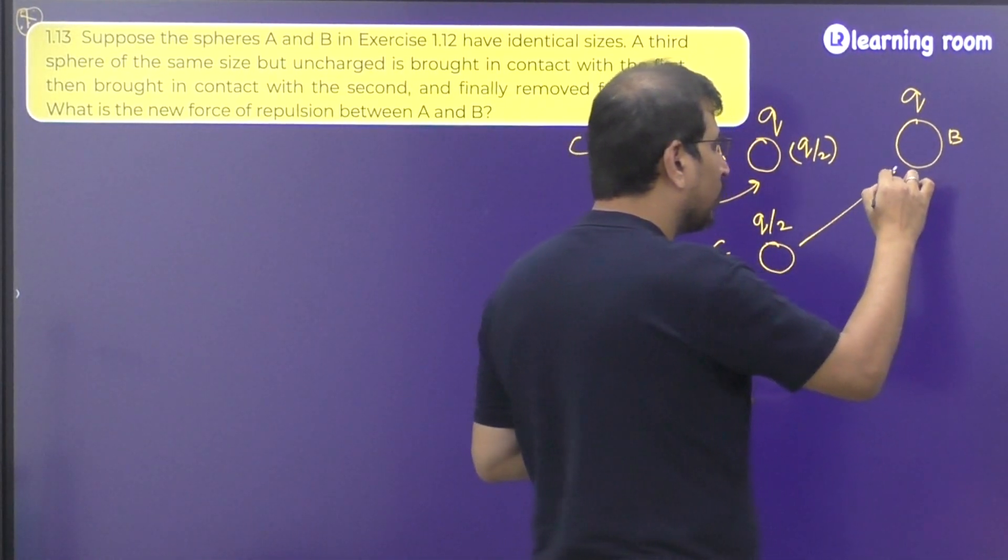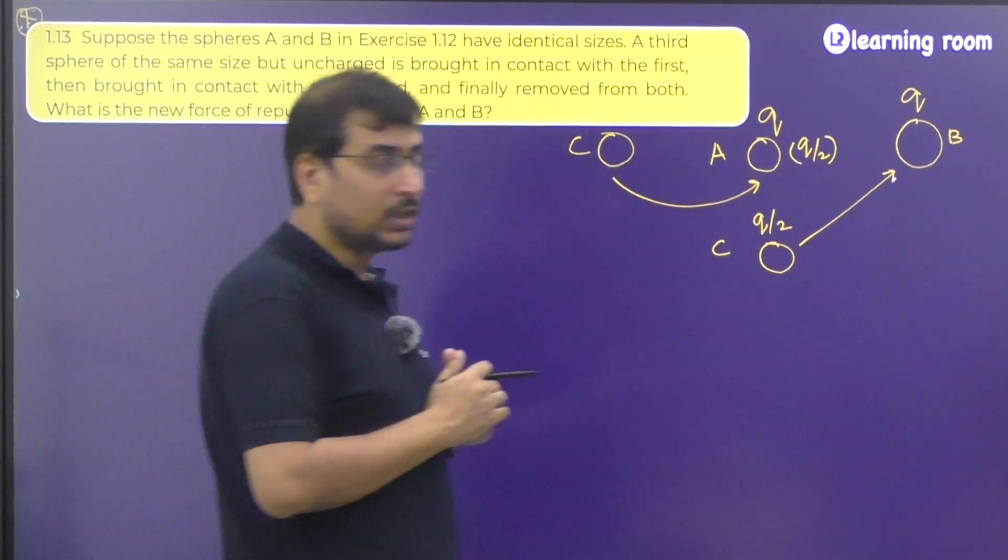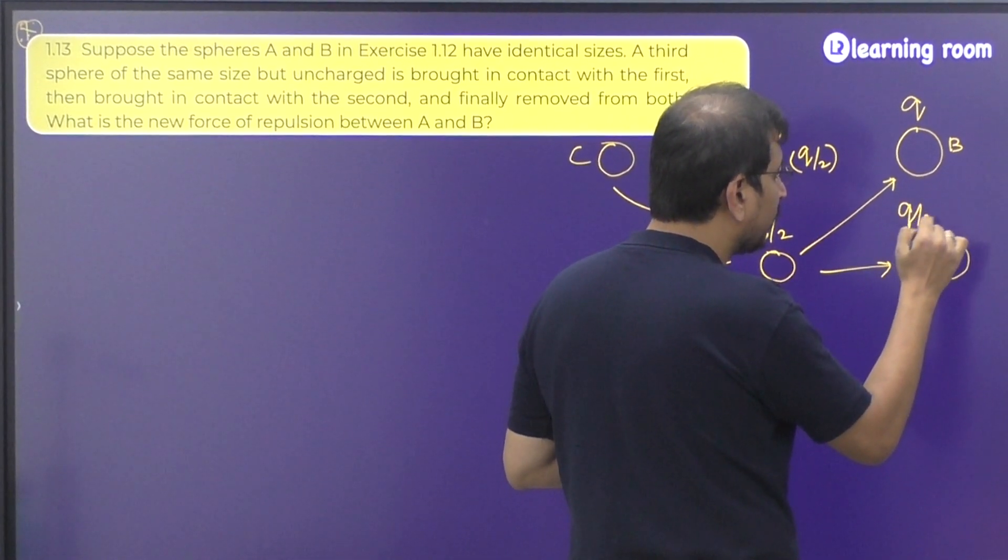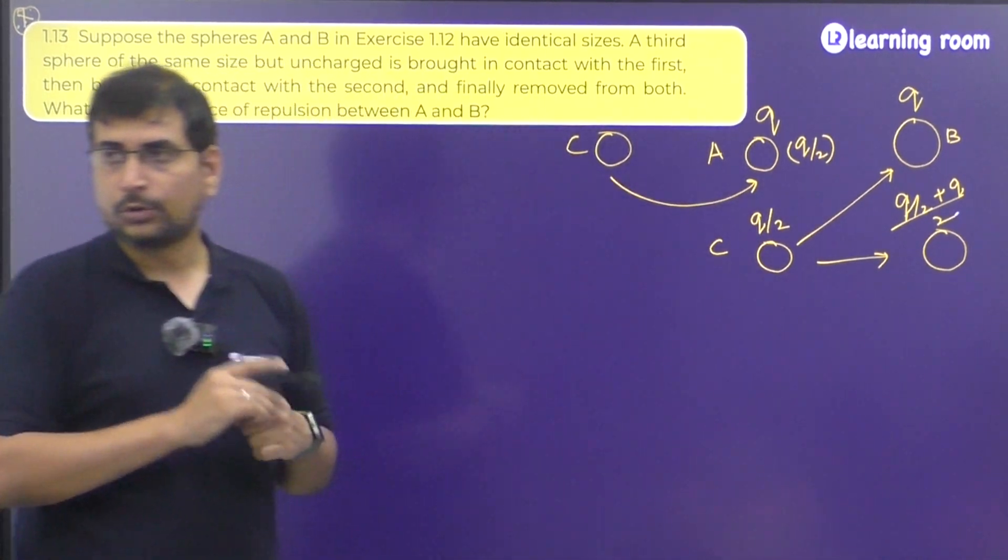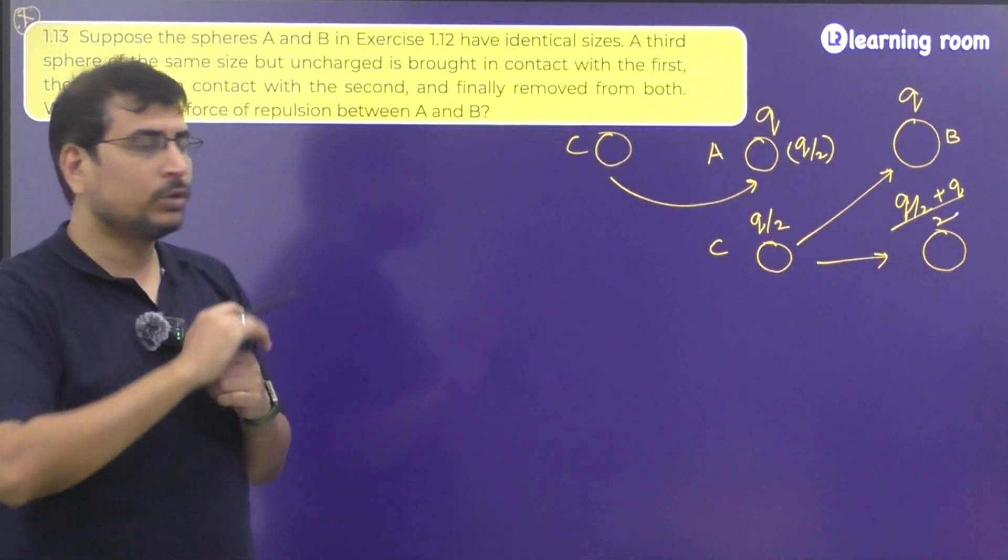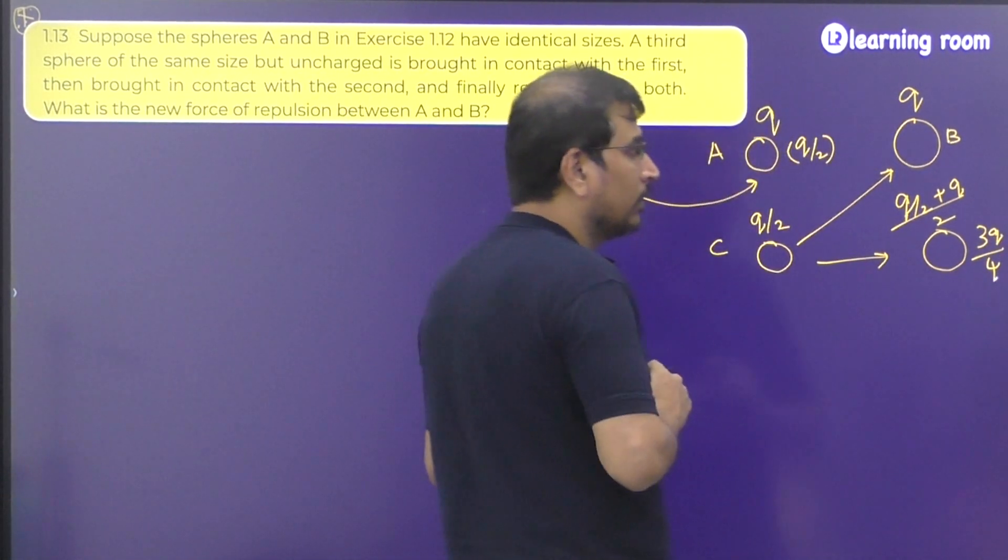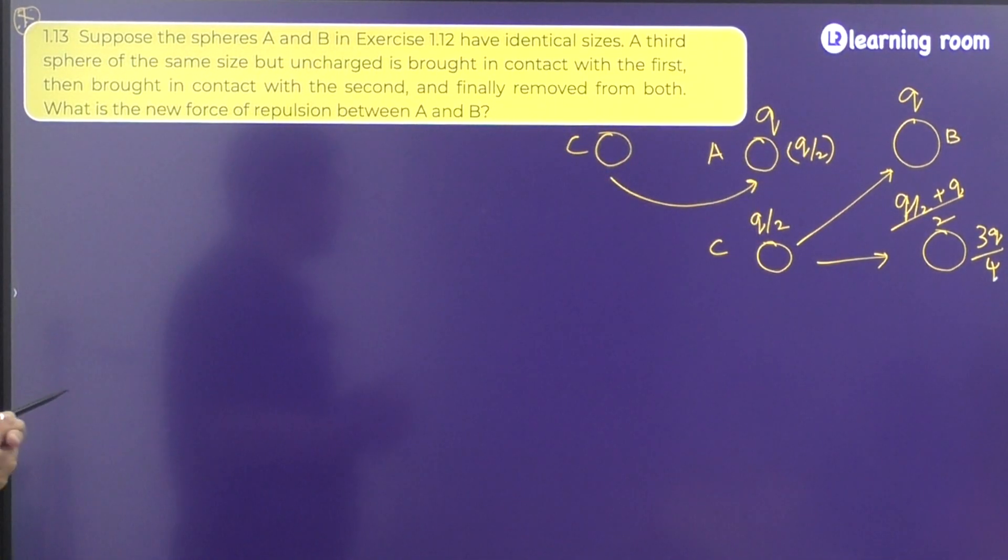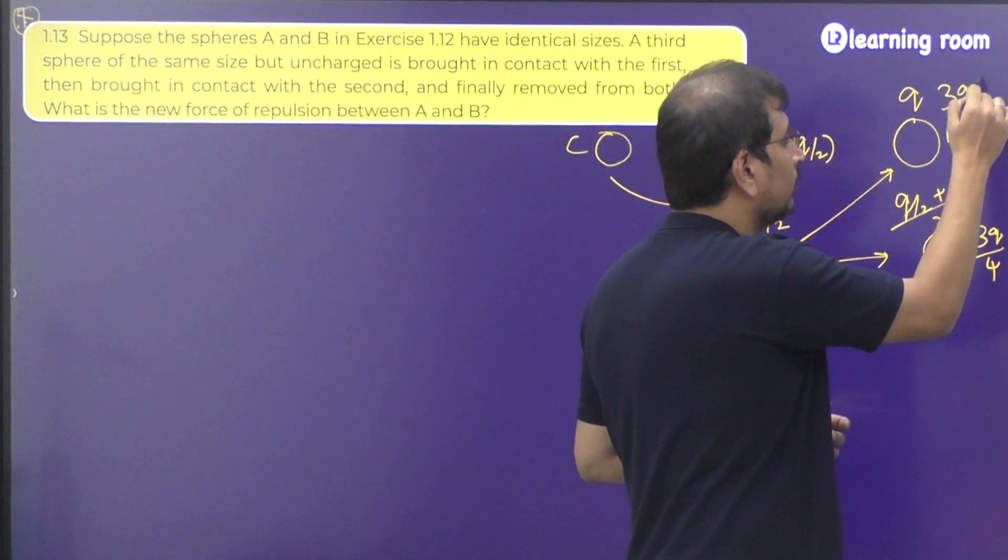Now this Q by 2 is taken in contact with B and removed again. So what will be the new charge that will be available? It will be Q by 2 plus Q the whole divided by 2. I told you, you need to take the average. So Q by 2 plus Q the whole divided by 2, it will become 3Q divided by 4. Then how much is the charge that is going to be present here, maybe the same thing.